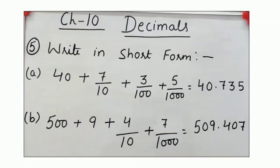Next, question part b: 500 plus 9 plus 4 by 10 plus 7 by 1000. Here is not available the 100s place, so we will write in place of 100s, 0. So, the short form is 509.407.